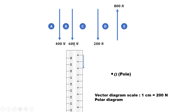Then the 600N force: 600N divided by 200 is 3cm. It is lying between B and C. So BC is another vector of 3cm, from 2 to 5cm on our diagram. Then C to D represents the force of 200N, and 200 divided by 200 is 1cm. So a 1cm vector is shown over here.